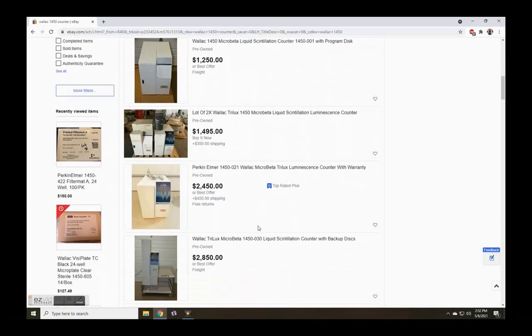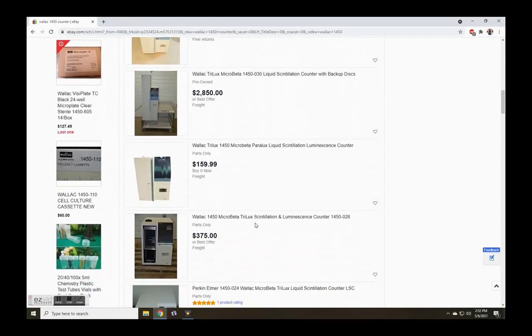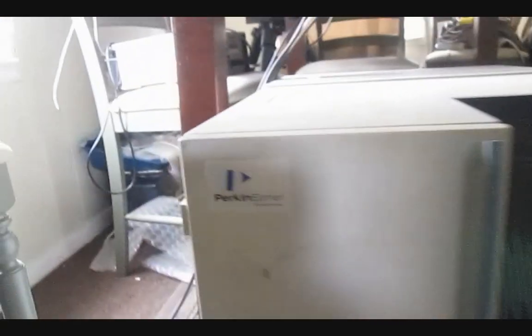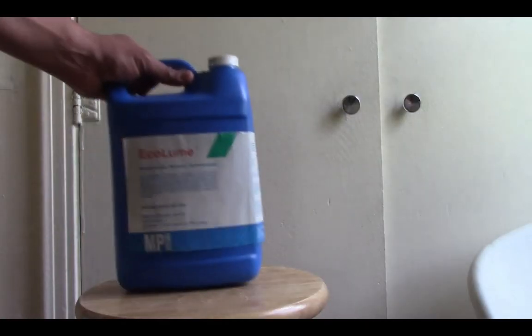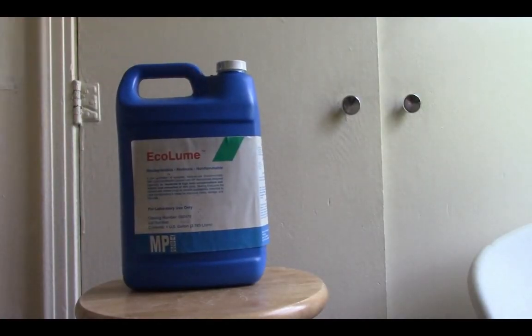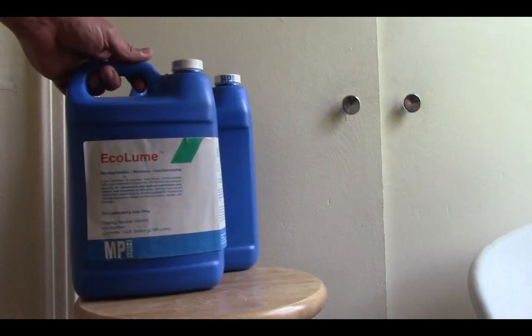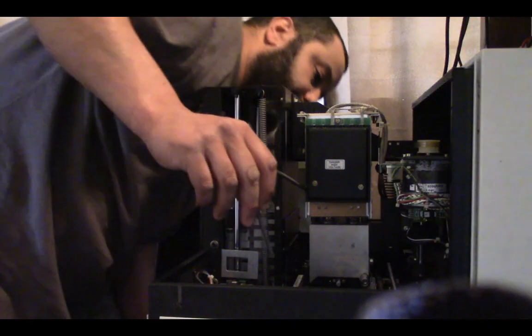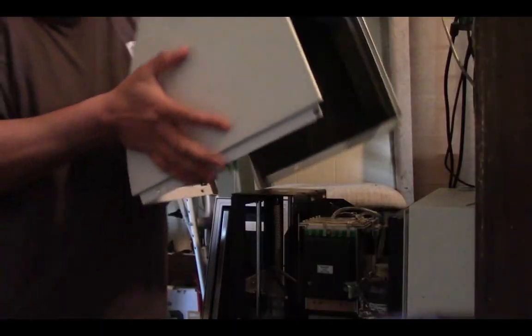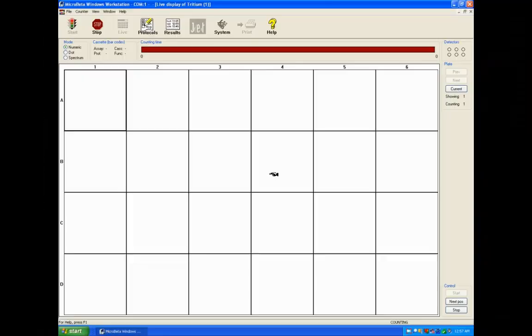So browsing eBay again, I found this liquid scintillation counter for cheap. The shipping for such a heavy lead-shielded unit was not. I was also lucky enough to find two gallons of this liquid scintillation chemical with high water and ionic tolerance for $75. After many hours repairing this unit, I got it to work with the software, which only functions under Windows XP.